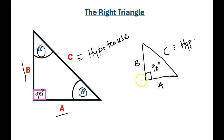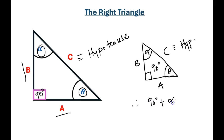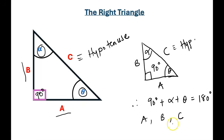This is the right triangle, and we know any triangle has three interior angles. In this case, we have theta and alpha. The sum of these interior angles must be equal to 180 degrees. Therefore, we can say 90 degrees plus alpha plus theta equals 180 degrees. The lengths of the three sides are given as A, B, and C. That is what we mean by a right triangle.